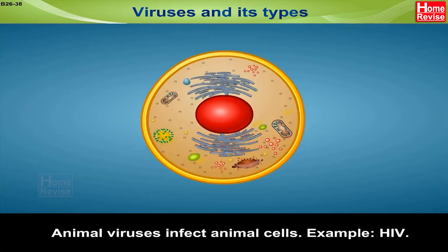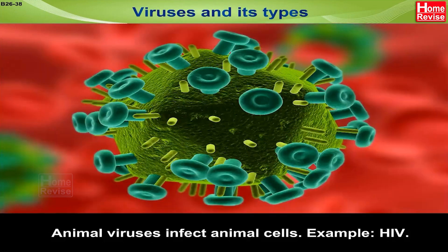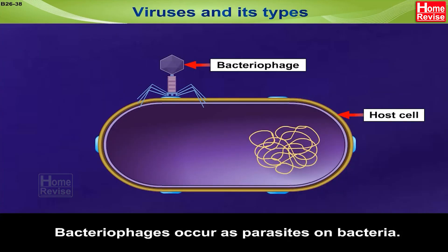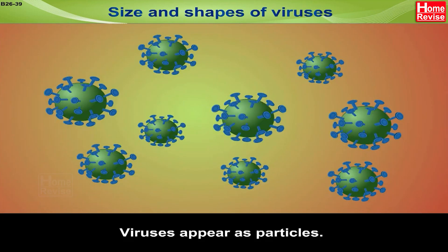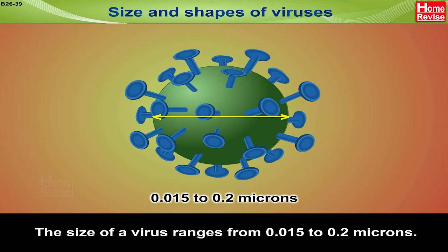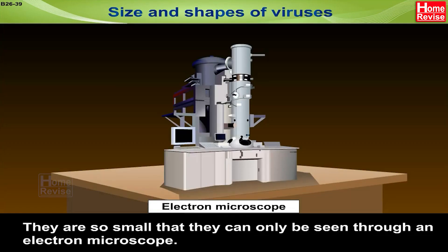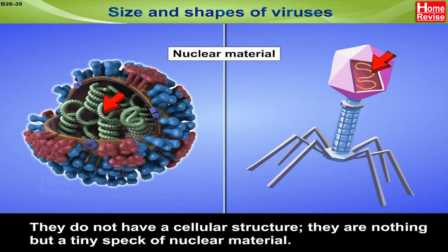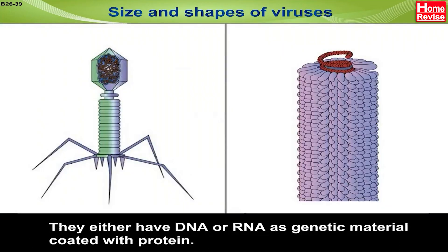Animal viruses infect animal cells — for example, HIV. Bacteriophages occur as parasites on bacteria. Viruses appear as particles. The size of a virus ranges from 0.015 to 0.2 microns. They are so small that they can only be seen through an electron microscope. They do not have a cellular structure; they are nothing but a tiny speck of nuclear material.